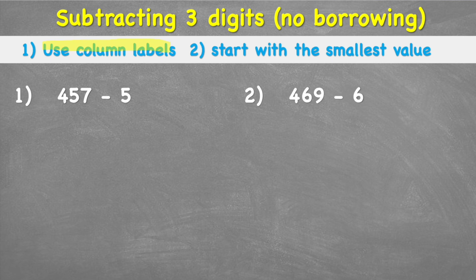First, we're going to remember to use column labels — this is really important to help us not put things in the wrong place. And secondly, we're going to start from the smallest value. We'll see what that means properly in a moment. The method we're going to use is called the column method.